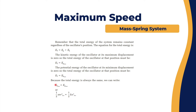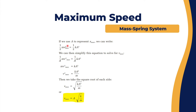We can represent those with equations: one-half mass times v_max squared equals one-half k times x_max squared. Let's replace x_max with amplitude A, so it can be written as one-half m times v_max squared equals one-half k times A squared.